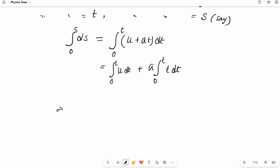Now in the next step, integration ds will give us s with limits 0 to s. And from here we will get, u will get outside so dt's integration is t with limit 0 to t, plus a integration t dt.